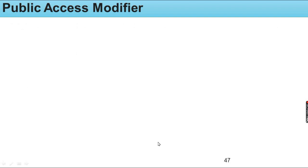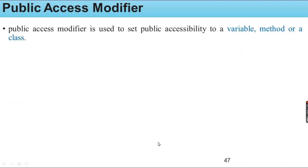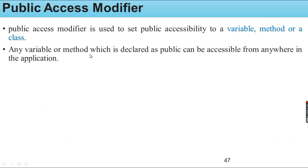Public access modifier is used to set public accessibility to the variable, method, or a class. Any variable or method which is declared as public can be accessible from anywhere in the application. A public declared class, method, or variable can be accessed anywhere in the Java application.